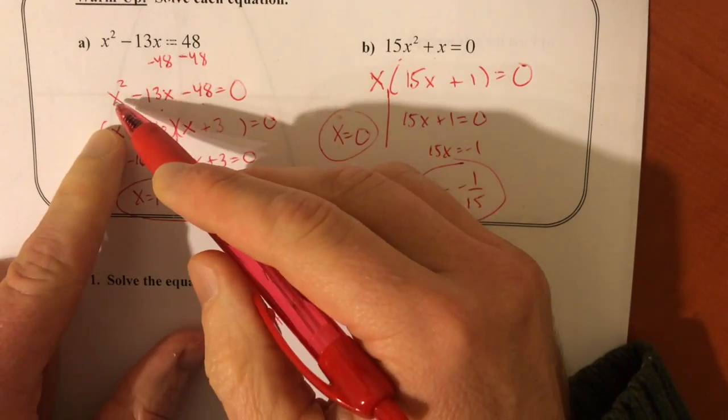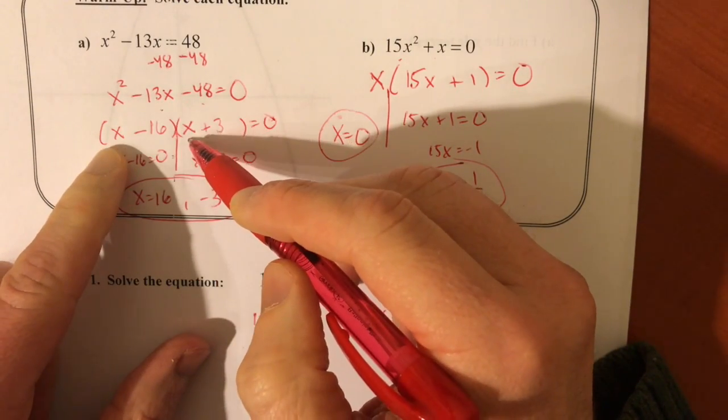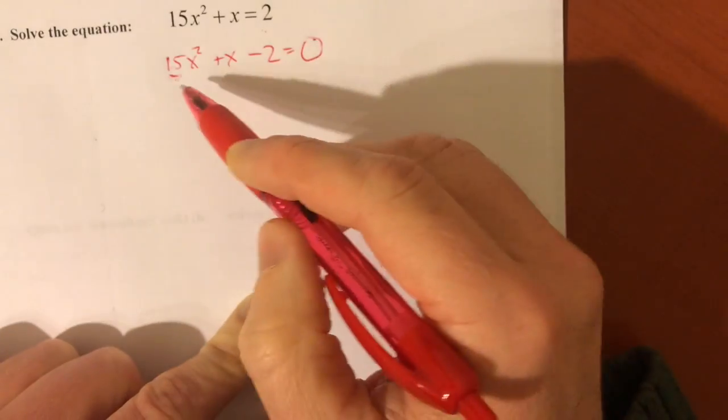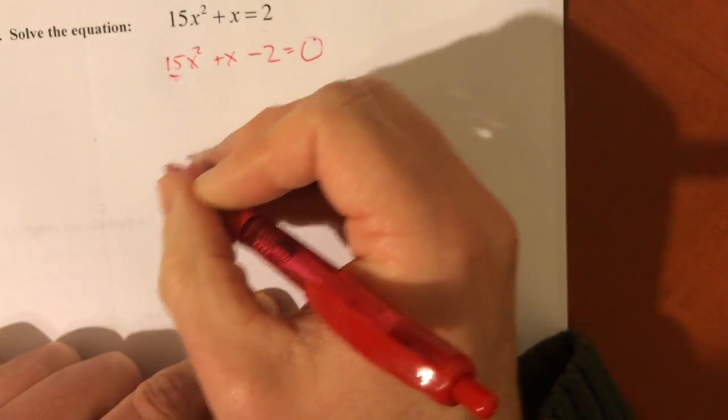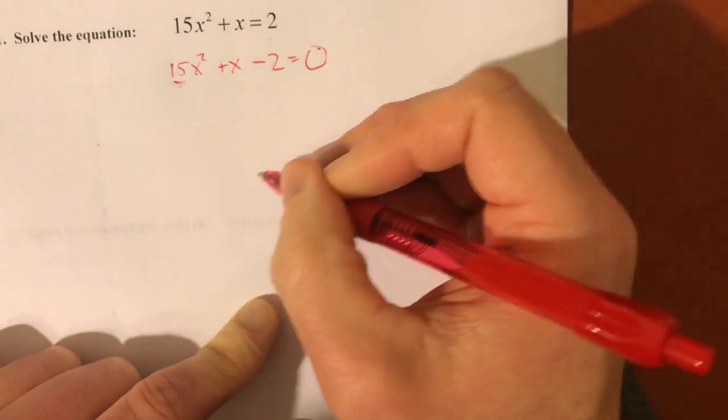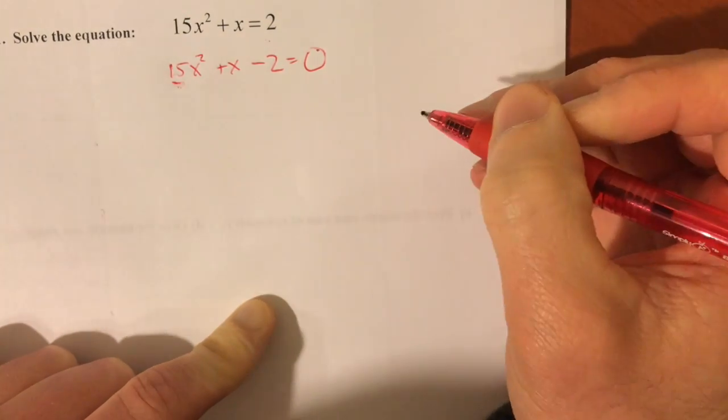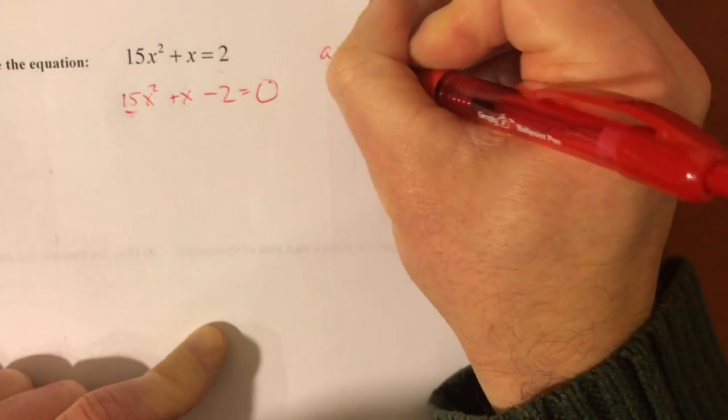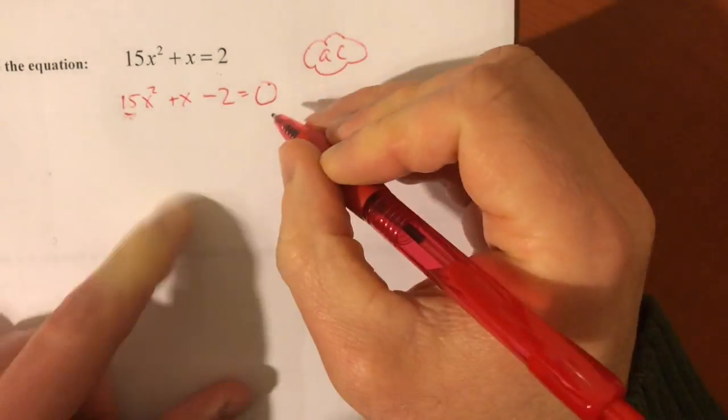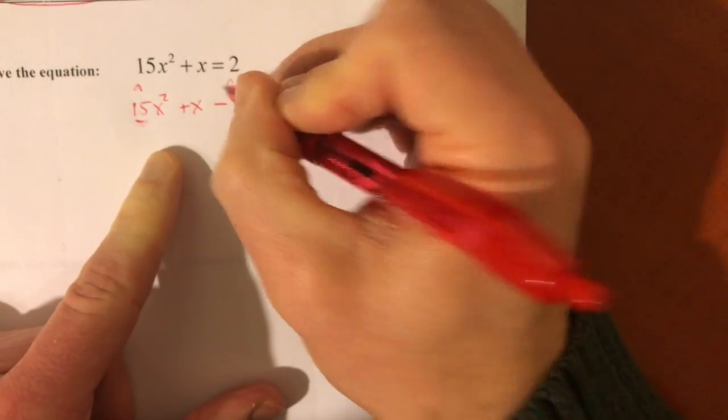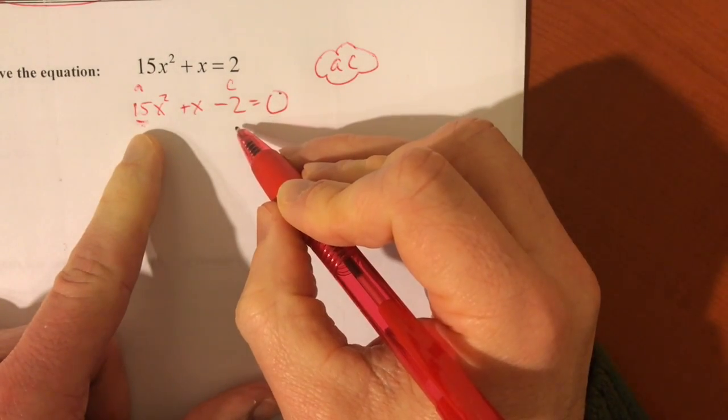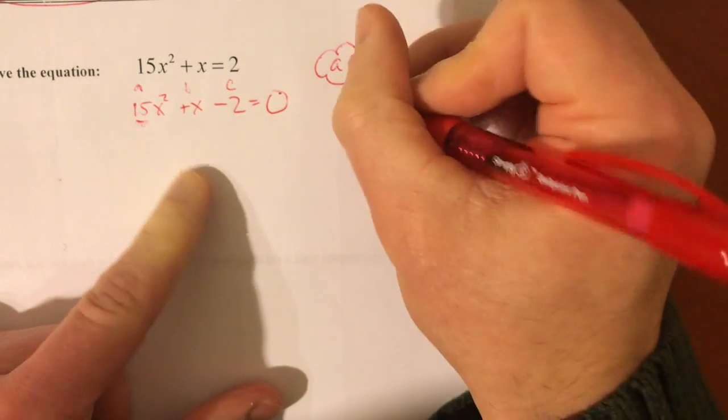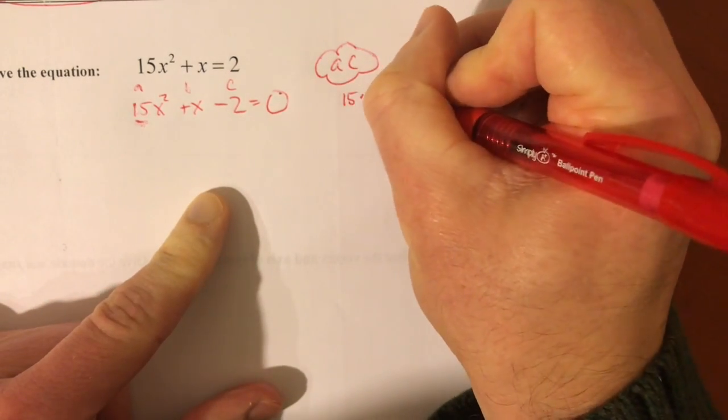And now this is where we're going to try to use the AC method. Remember, if it's just x squared, that's where you can really just move to this x and x unfoil approach. But if it's 15x squared, this is where you've got to either try the guessing and checking method of trying to come up with the right combination, or just use the AC method. So the AC method here, remember the idea is, here's A, here's C, and here's B, of course. AC is the first step. 15 times negative 2. The first coefficient times the last gives you negative 30.